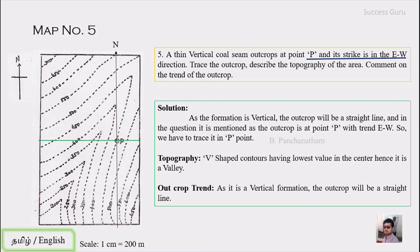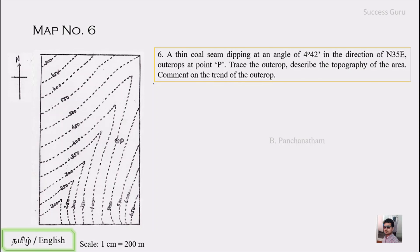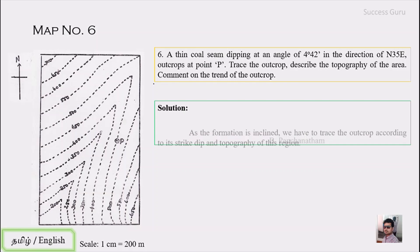We have solved map number five. Now we move to map number six, which is a bit different. The question states: a thin coal seam dipping at an angle of 4 degrees 42 minutes in the direction of N35°E outcrops at point P. Trace the outcrop, describe the topography, and comment on the trend. So far we dealt with horizontal and vertical formations, but now we deal with an inclined formation, and the outcrop will have a different pattern.